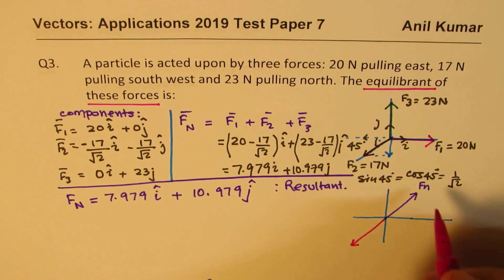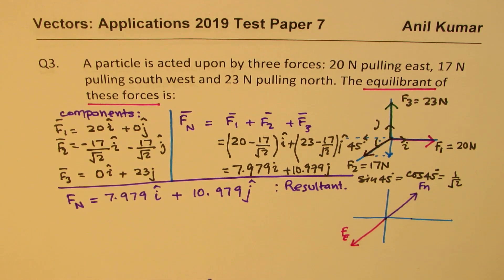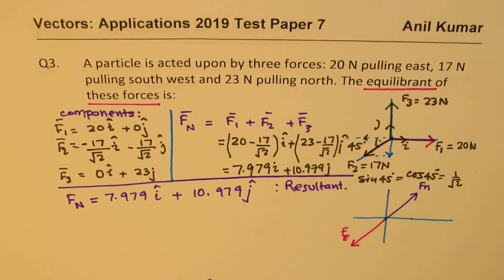So that equilibrant force will be acting in the reverse direction. You get my point. So that is your force which is equilibrant force. This is what we need to find. So it is acting in the reverse direction.